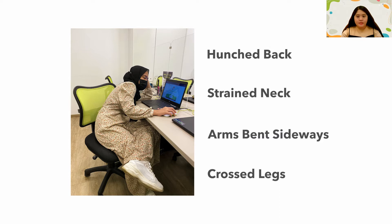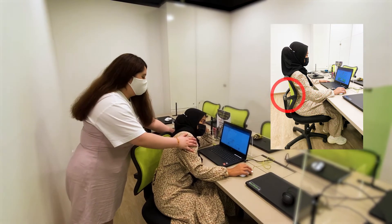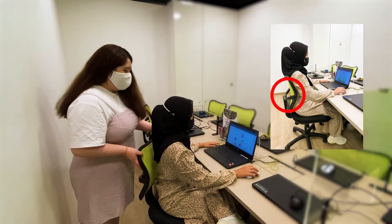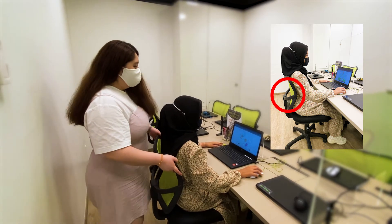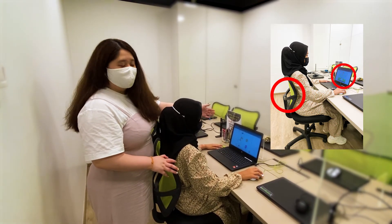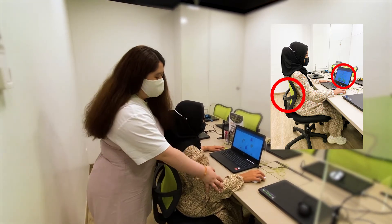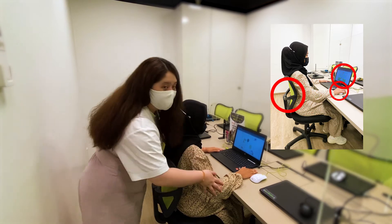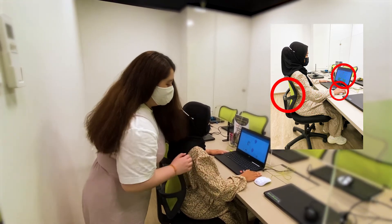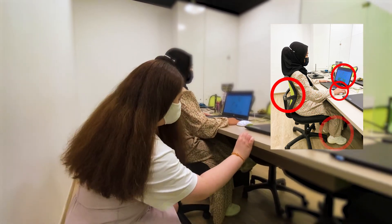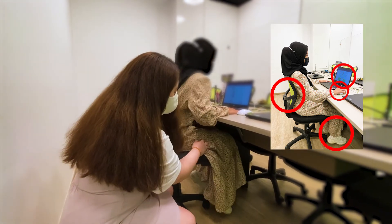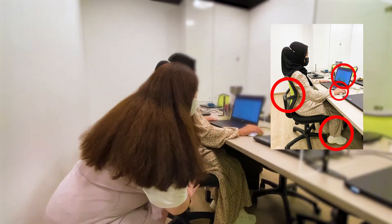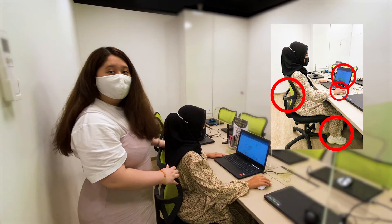Let me show you the right way you should be sitting when using the computer. When you sit down, ensure your back is straight. The chair facing the computer screen. Make sure that the computer screen is at eye level so you would not strain the neck. Both arms should be rested on the table in an L-shaped form, like this. And lastly, the legs should be down on the ground — no crossing of the legs and ankles. And this is how you sit properly. Now we are ready to begin our work at the computer.